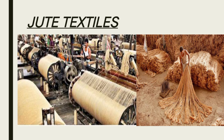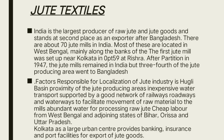The jute industry is one of the greatest industries. After the partition of 1947, three-fourths of the jute-growing areas went to Bangladesh (East Pakistan). India is the largest producer of raw jute but stands second in jute bag production, with Bangladesh first. There are about 70 jute mills in India, most located in West Bengal along the banks of the Hooghly River. The first jute mill was set up near Kolkata in 1855; the cotton mill was set up in 1854.